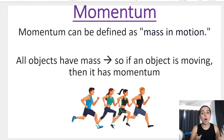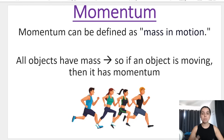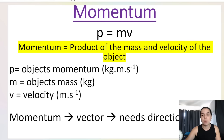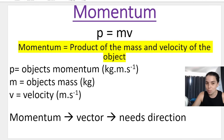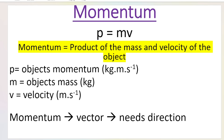The first thing you need to know is that if an object is moving, it has momentum. So if I'm standing completely still — I don't have a velocity, I'm not moving — therefore I have no momentum. Momentum is the product of the mass and the velocity of the object. You take the mass in kilograms — mass must be in kilograms — multiplied by the velocity in meters per second, and then we get momentum.